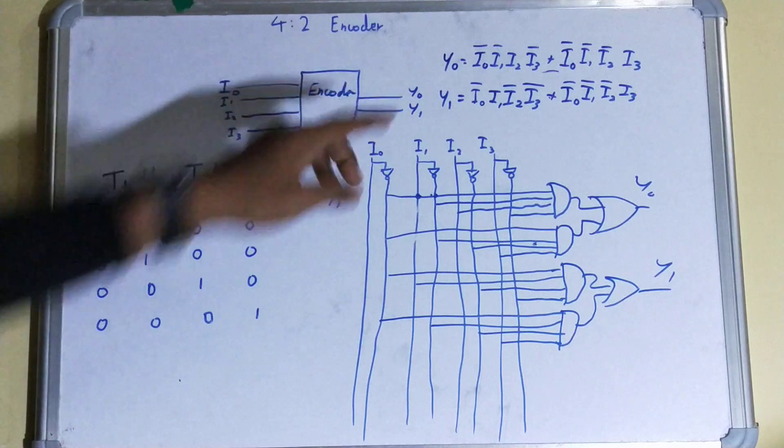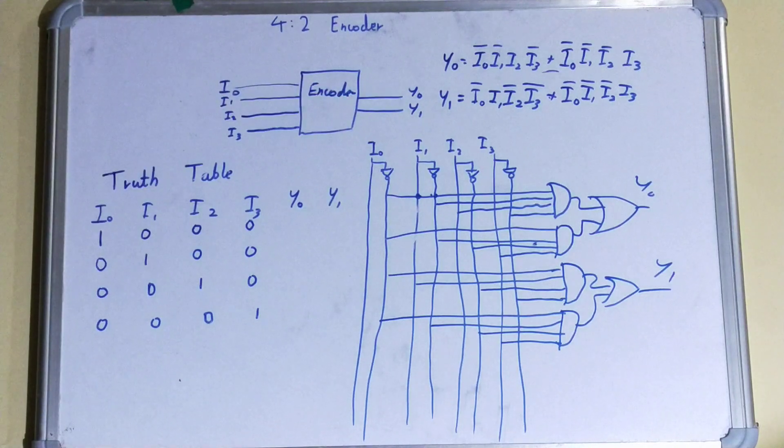These are generally used when you are transmitting data from your sender system to your receiver system. At the sender system, the encoder does the encoding, and at the receiver system, the decoder does the decoding. So let's quickly start with this 4-to-2 encoder.